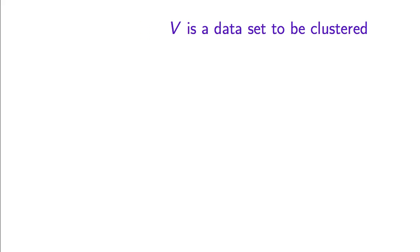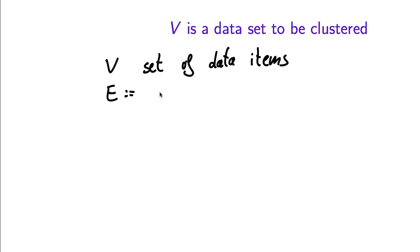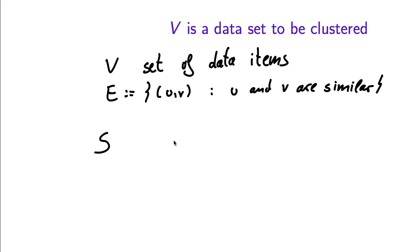Another interesting example where conductance comes up is when our graph has V as a set of data items, and E is defined as the set of all pairs of items that are similar. If we find some set of items whose conductance is small, that means the elements of this set are much more similar to each other than to any other element of the dataset — a fairly plausible notion of what constitutes a cluster.